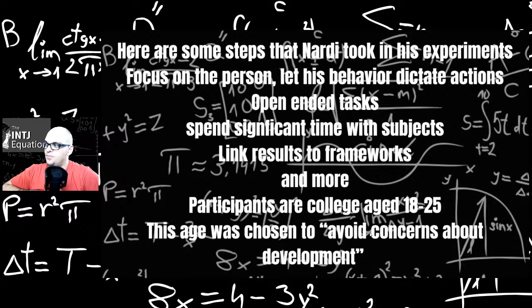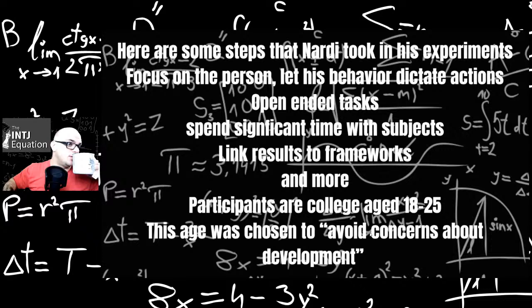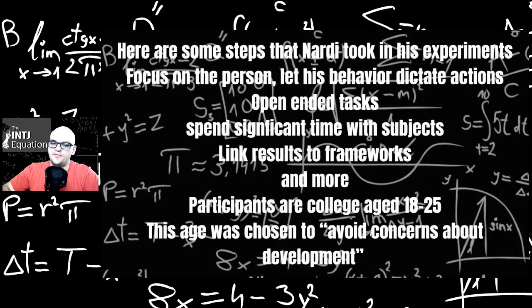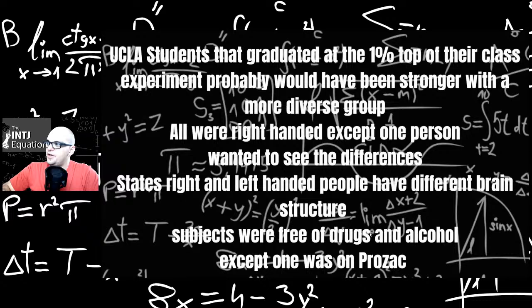Here are some steps that Nardi took in his experiments: focus on the person, let his behaviors dictate action, open-ended tasks, spend significant time with the subjects, links to frameworks and more. Participants are all college age 18 to 25. He wanted to avoid some of the concerns about development. I noticed after 25, people usually mature and chill out, even people like inmates who have antisocial personality disorder and who are unredeemable by society. So that's one weakness in this study. I think having anywhere from 18 to 80-year-olds would have been better, but I do see his concerns.